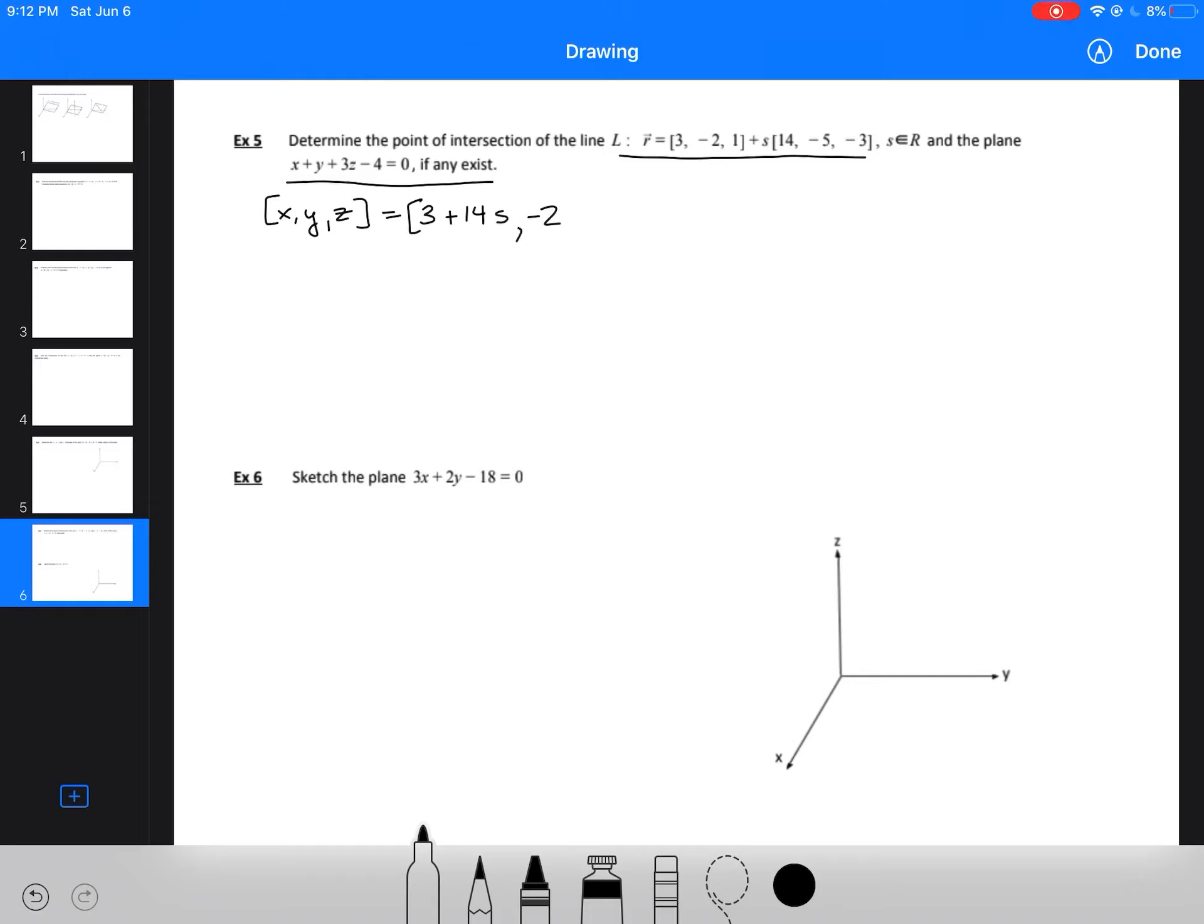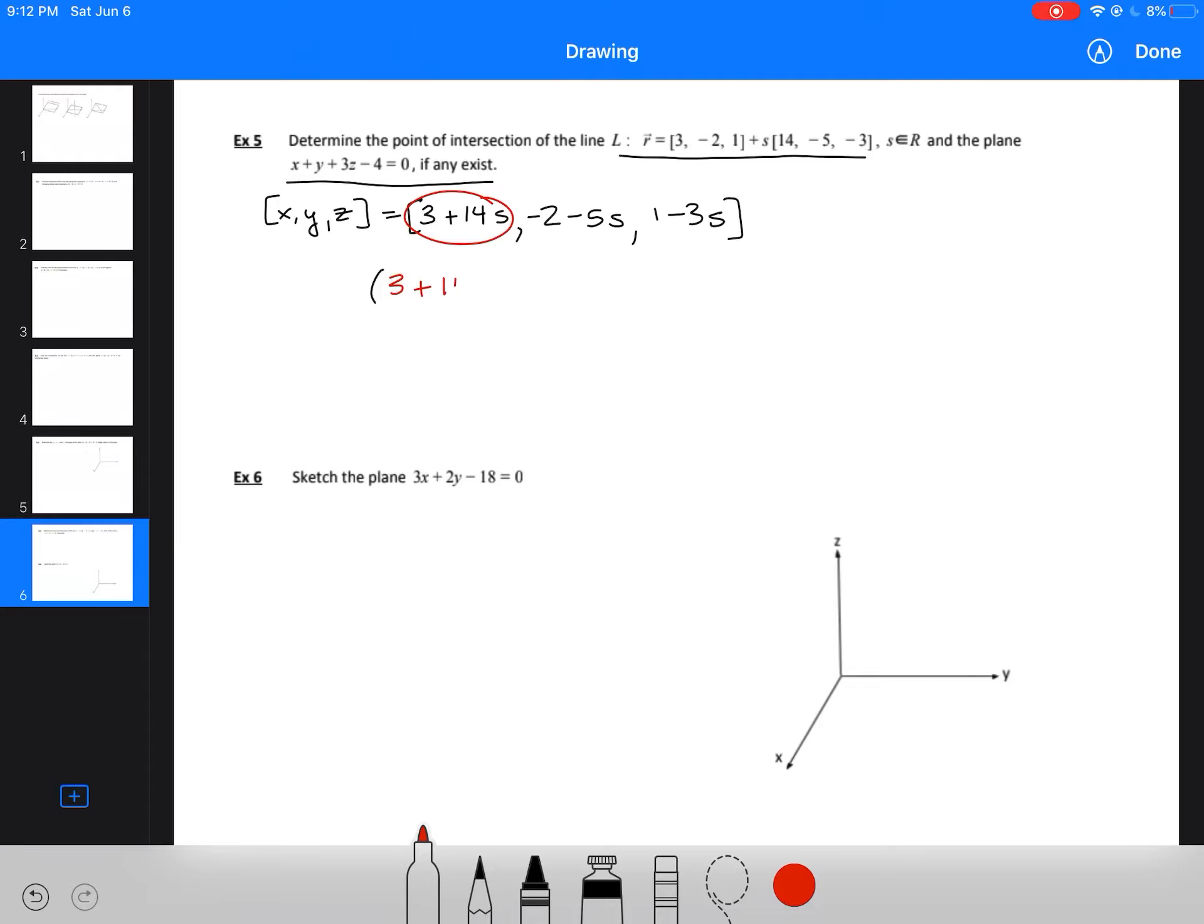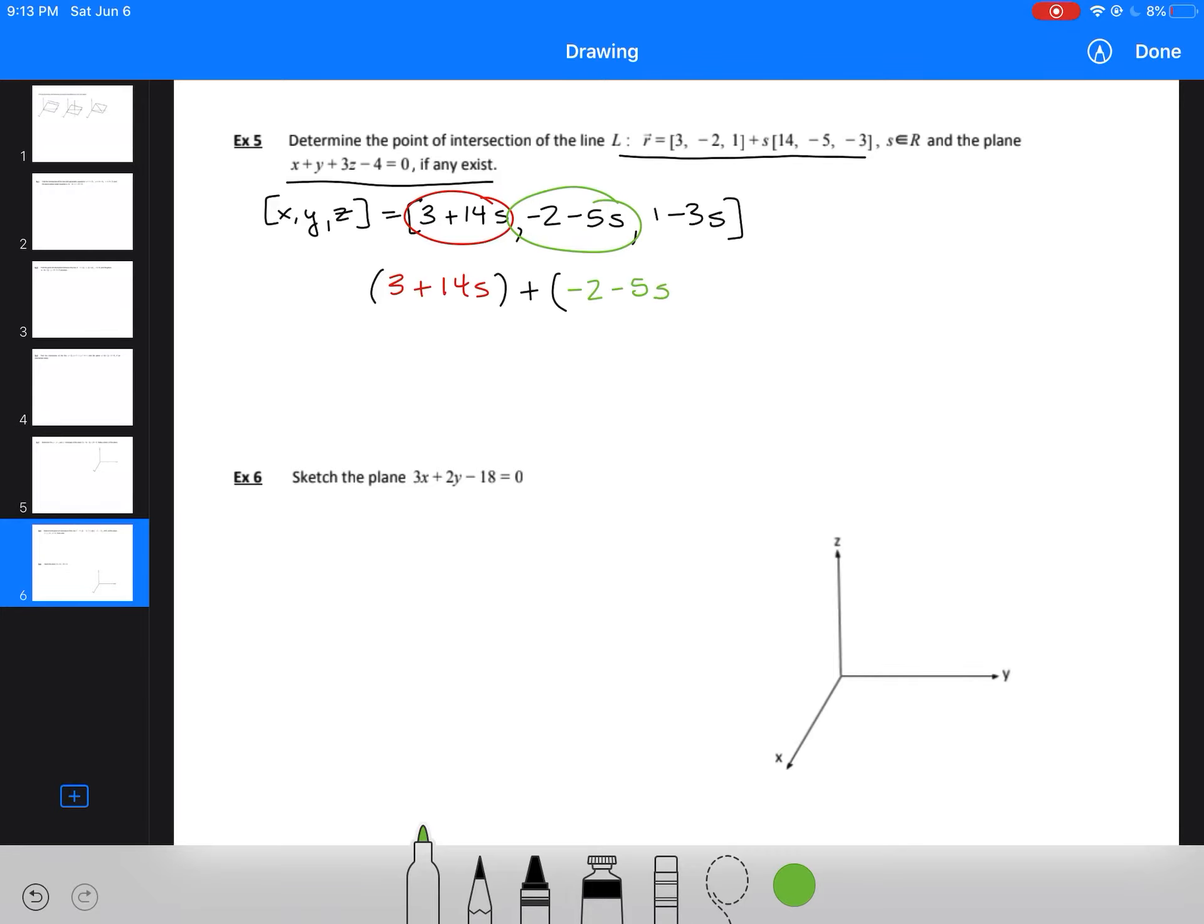We've got 3 + 14s, minus 2 minus 5s, and then 1 minus 3s. That's our any point on the line. We'll substitute that point into our equation of the plane. Starting with x, taking our x parametric equation: 3 + 14s. Plus y: minus 2 minus 5s. And then z: plus 3 times (1 minus 3s). We'll insert our parametric equation for z into the equation of the plane. Don't forget about the d coefficient in your scalar equation of a plane.